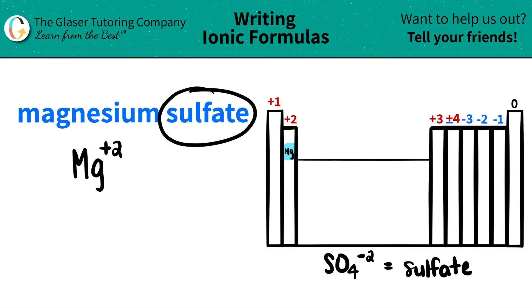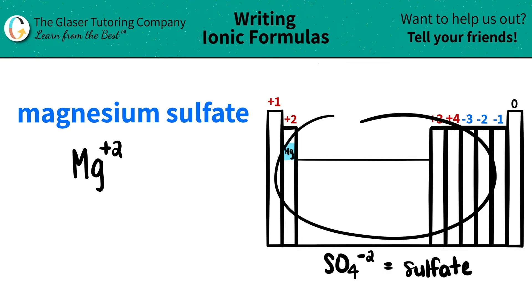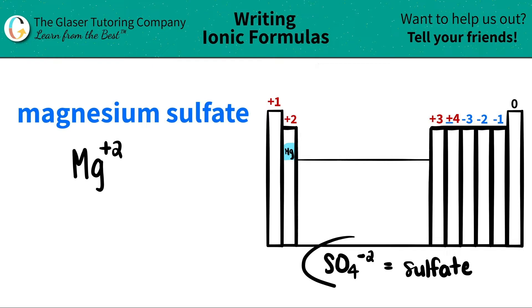Now I come over to the next part. It says that it's a sulfate, and ATE endings — remember, ATE endings — are they found on the periodic table? No, they're not. They're polyatomic ions. So for the sake of this video, I wrote down what sulfate is, but you guys probably have to memorize it for your class. So flashcard it out, write it down, do whatever you got to do to just memorize that sulfate is always going to be SO4 with a negative 2 charge.